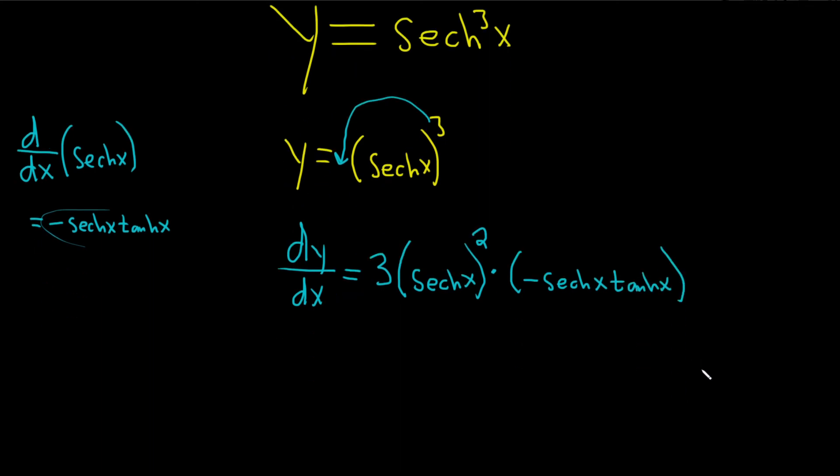We can simplify this a little bit, right? Because this here is really to the first power. So we can combine these and put the negative in the front. So dy dx is equal to negative 3 hyperbolic secant of x cubed hyperbolic tangent of x.